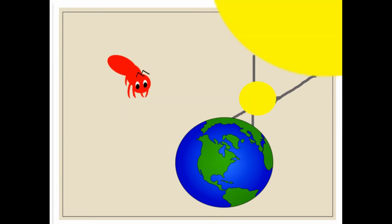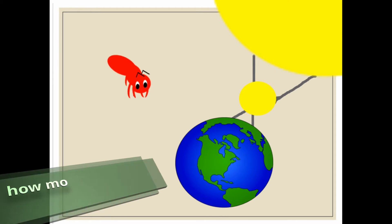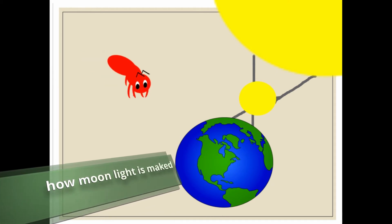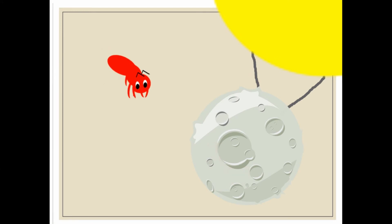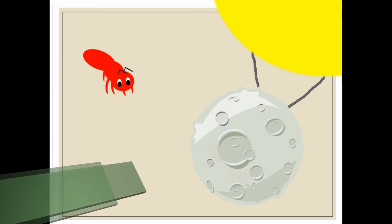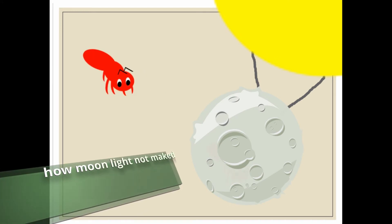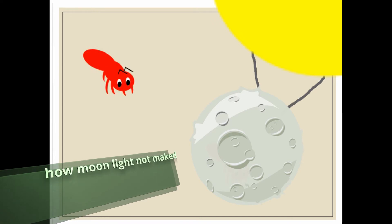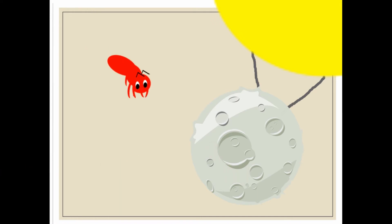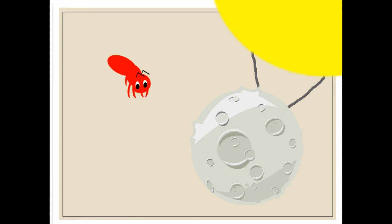Now I can see the sun. The sunlight comes to the moon and moonlight comes to Earth. So here is the moon and here is the sun. The sunlight is reflected by the moon, and that is why we see moonlight. The reason is that the moon does not have its own light.